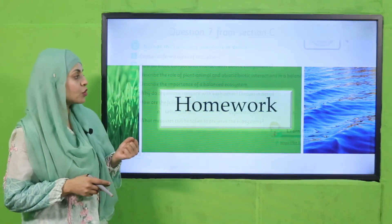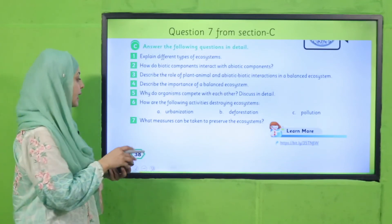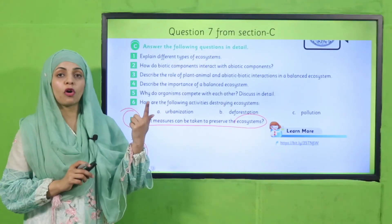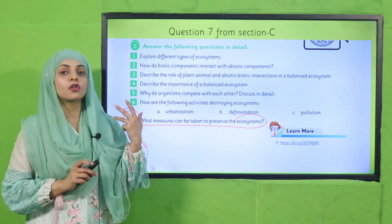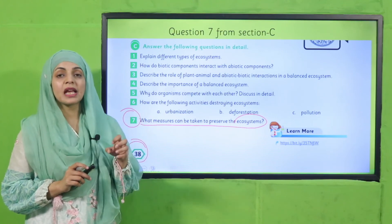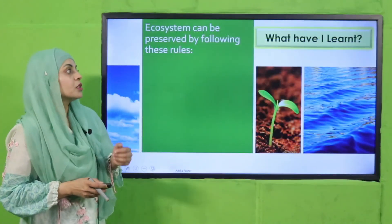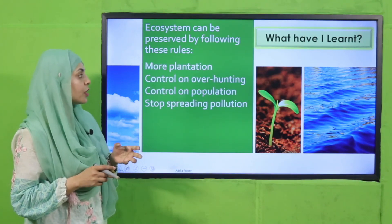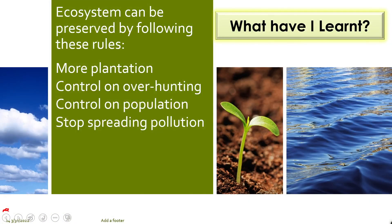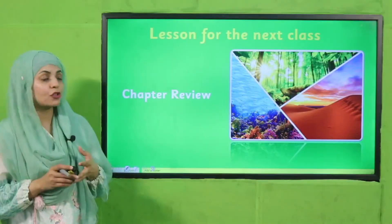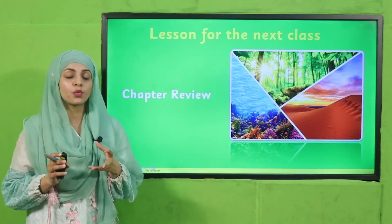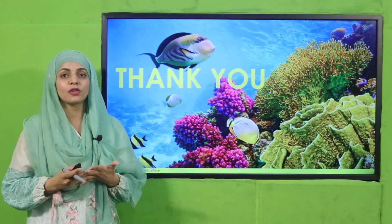For homework, do Question 7 from Exercise C on page 38: 'What measures can be taken to preserve the ecosystem?' — that is, control of population, control of pollution, control of deforestation, and stop over-hunting. Today we learned that the ecosystem can be preserved by more plantation, controlling over-hunting, controlling population, and stopping pollution. In the next lecture we will review and revise this chapter, and I will evaluate you through an assessment. Keep everyone around you safe. Have a good day. Thank you so much. Allah Hafiz.